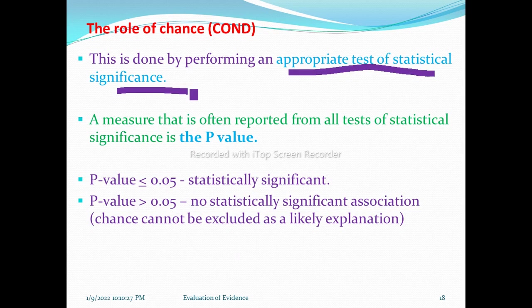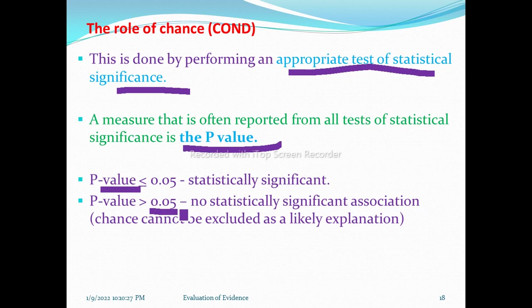A key measure from tests of statistical significance is the p-value. If the p-value is less than or equal to 0.05, the finding is statistically significant. If the p-value is greater than 0.05, there is no significant association between exposure and disease, and chance cannot be excluded as a likely explanation. If p < 0.05, chance is excluded as an explanation.